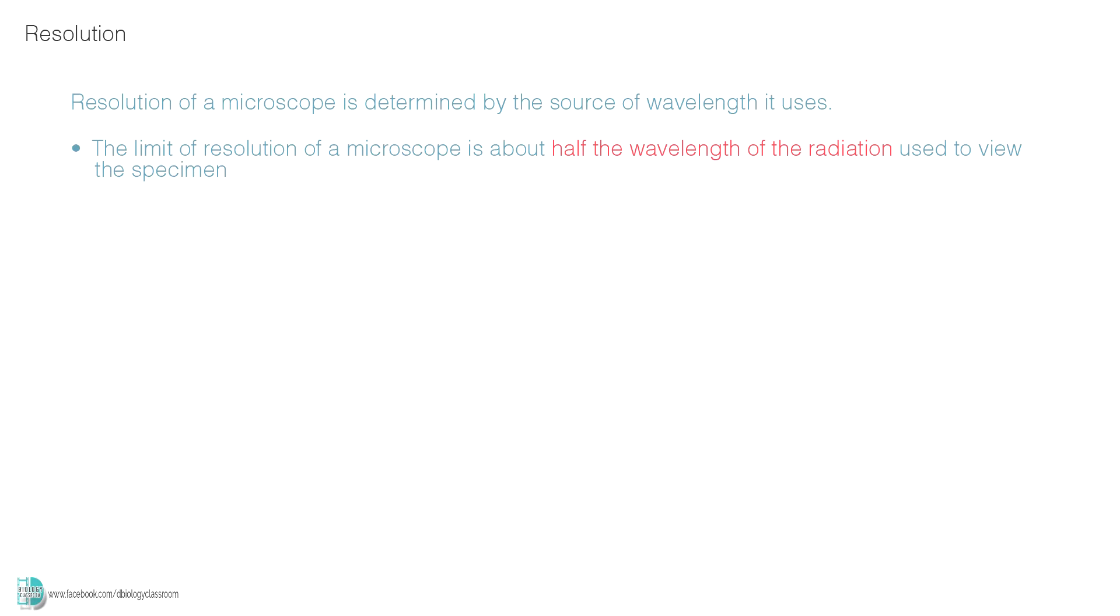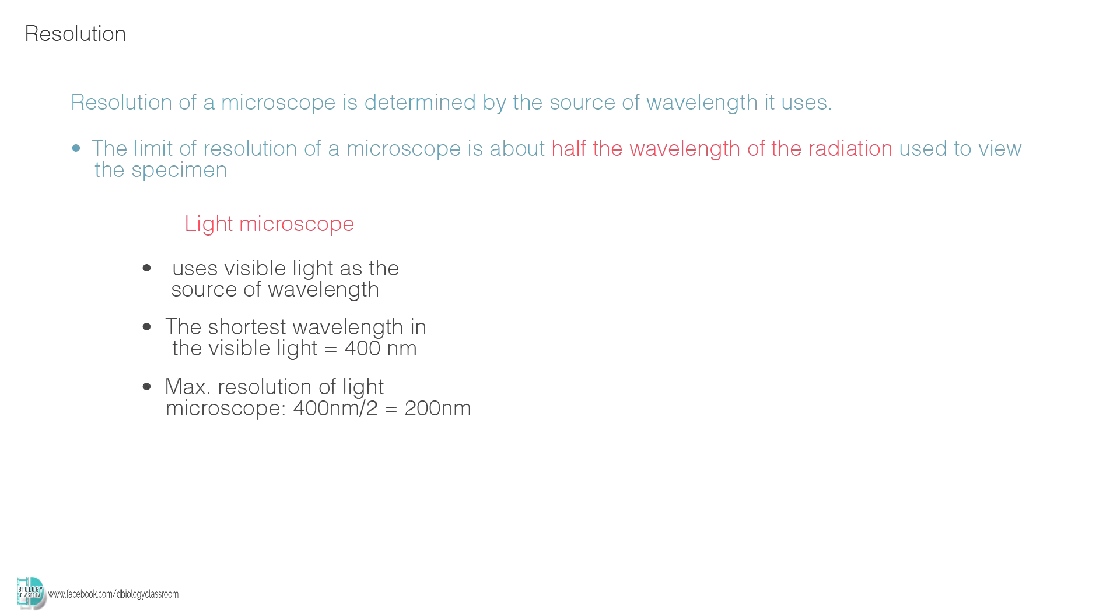For example, the light microscope uses visible light as the source of the wavelength. The shortest wavelength in the visible light is 400 nm. So, the best resolution that can be obtained by using a light microscope is 400 nm divided by 2, which is 200 nm. Any structure which is smaller than 200 nm cannot be seen under the light microscope.